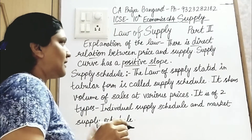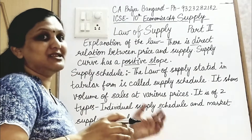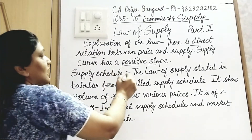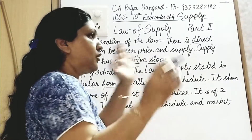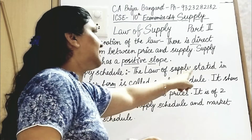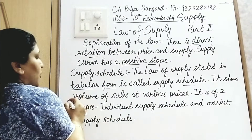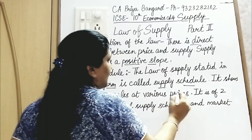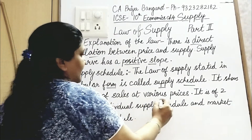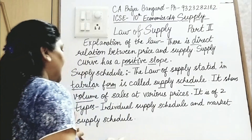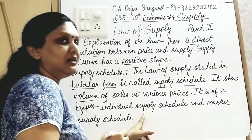Now, the supply schedule. It is a tabular representation that shows what quantity has been supplied at various prices. The law of supply stated in tabular form is called the supply schedule. It shows volume of sales at various prices. It is of two types: individual supply schedule and market supply schedule.